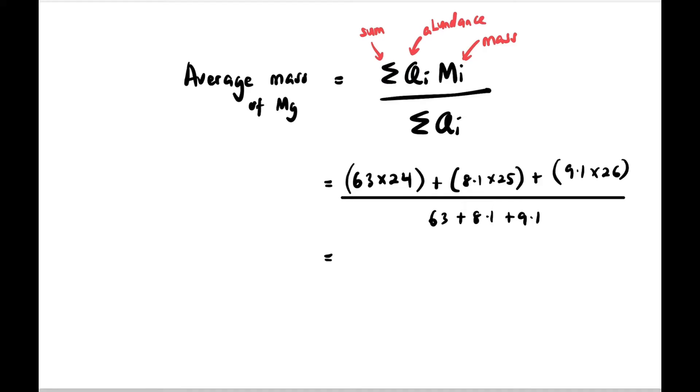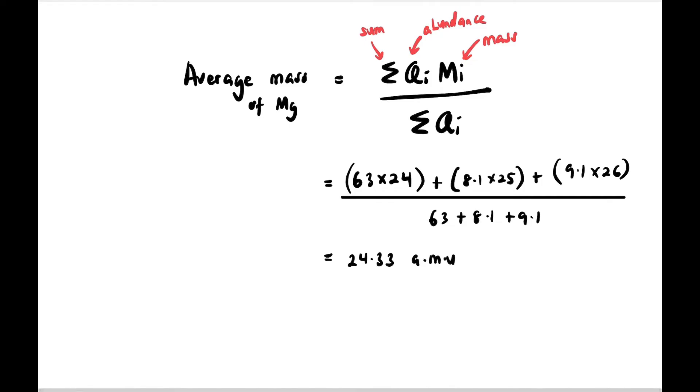Divided by sum of qi: 63 plus 8.1 plus 9.1. Let the calculator do the job and you should get 24.33 to two decimal places, AMU atomic mass unit. It has units because it's average mass.